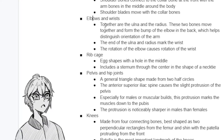Next are the elbows and wrists. The most important thing to know is that the ulna and the radius move together and form the bump of the elbow in the back — your funny bone — which helps distinguish the orientation of the arm. We draw this as a landmark because it helps clear up the confusion of expressing perspective and orientation in 2D. These two bones at their end mark the wrist as the bony protrusions on the side. Keep in mind, the rotation of the elbow causes rotation of the wrist — these bone structures move together.